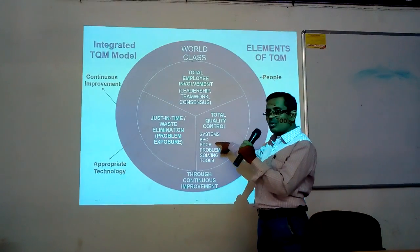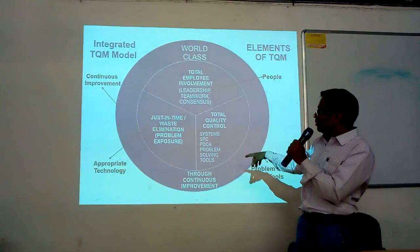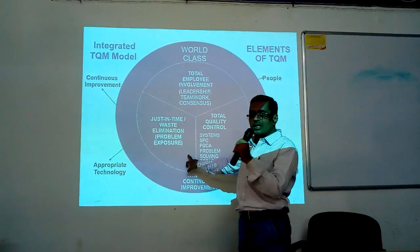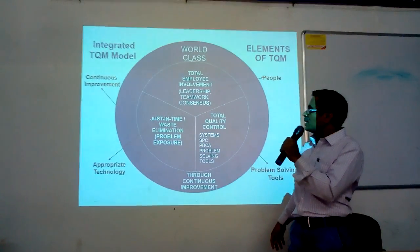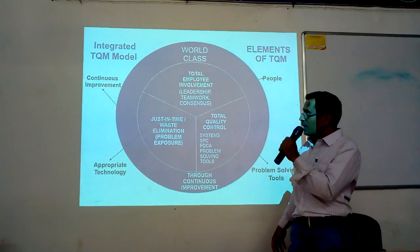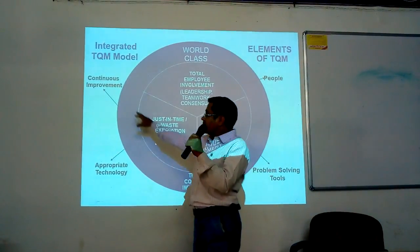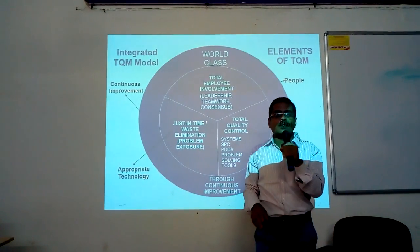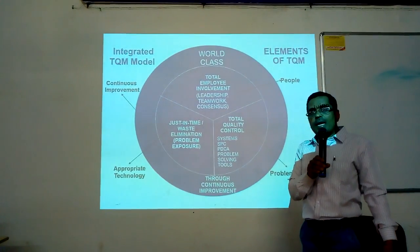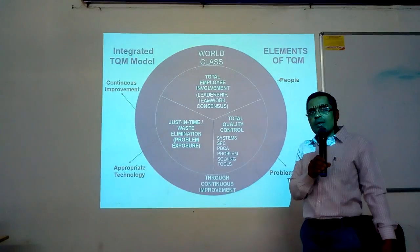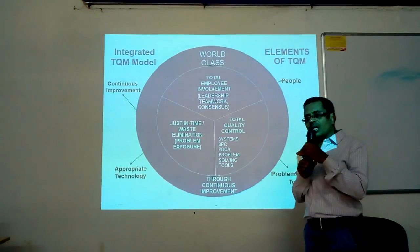Tools include PDCA — that is Plan, Do, Check, Act — the Deming cycle — statistical process control, and problem-solving tools. Then there is appropriate technology suited for the organization, like just-in-time or best derivation techniques. And the most important element is continuous improvement — that is Kaizen. One should not stop after a breakthrough improvement; small improvements should happen on a continuous basis.